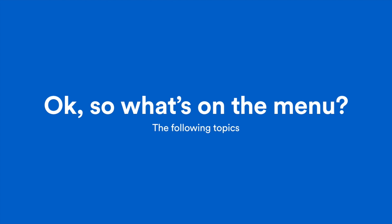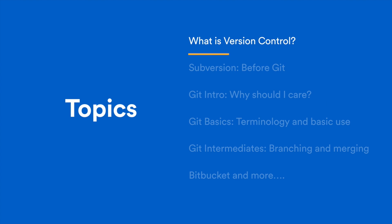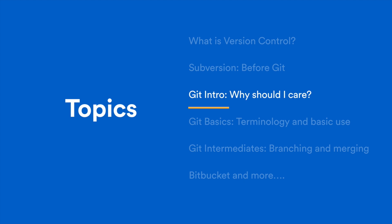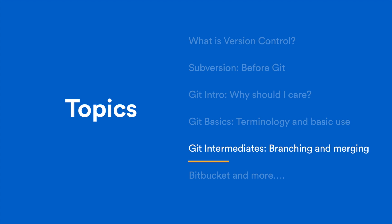So what's on the menu? In this video series, we're going to address the following topics: what is version control; Subversion, which is what people used before Git; a Git intro, which will tell you why you should care; Git basics, which will discuss terminology and basic use; Git intermediate, which will discuss branching and merging; and Bitbucket, and who knows what else, because I haven't finished the videos yet.